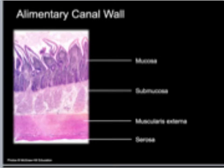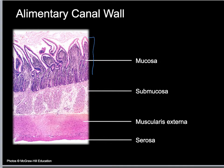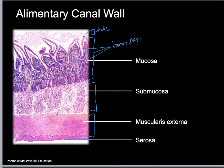Let's dive deeper into the histology. Here is a generic alimentary canal showing the mucosa, the submucosa, the muscularis externa, and the serosa, which is super thin. You can see the epithelium, the lamina propria, glands in the submucosa — which looks like mostly areolar connective tissue — and then the smooth muscle layer of the muscularis externa.